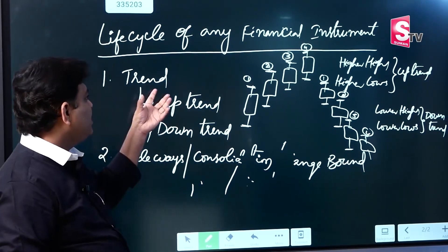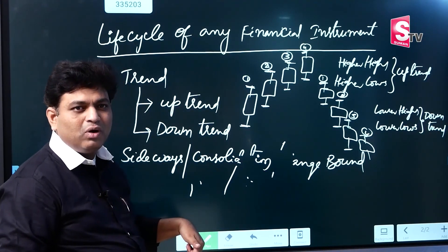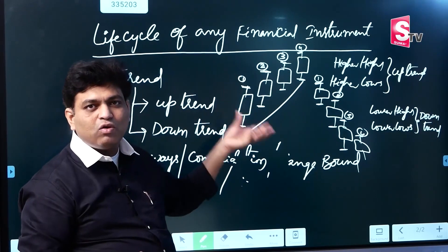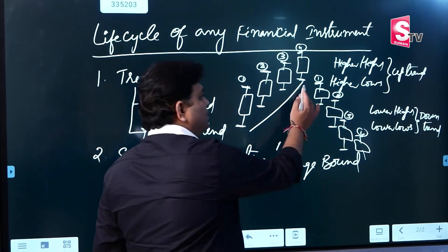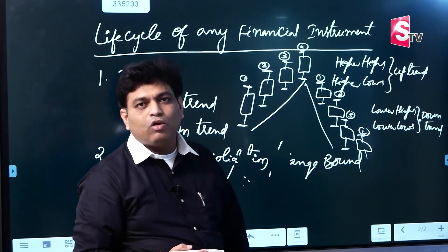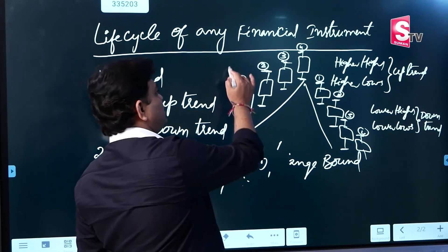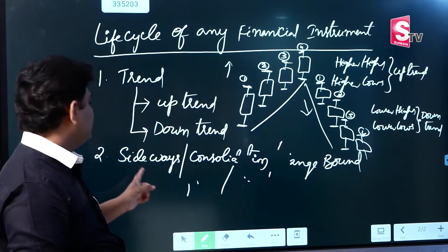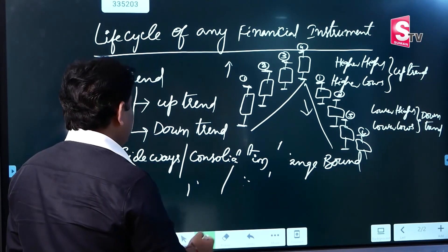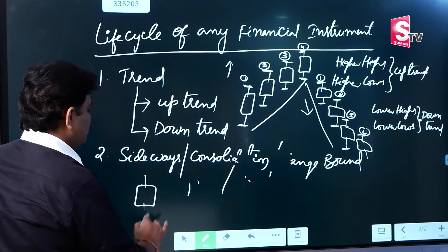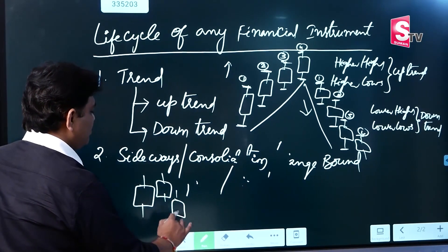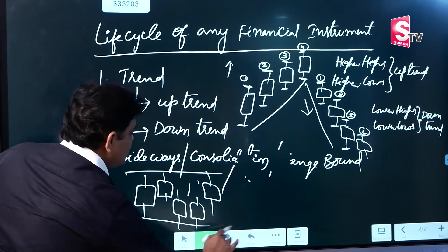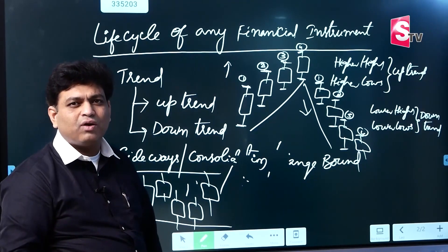So sideways is consolidation. Any particular counter goes through three states: number one, uptrend; number two, downtrend. In an uptrend, we call higher highs and higher lows. Lower lows and lower highs form a downtrend. And this sideways consolidation forms little zigzag candles. Now, we can trade a particular financial counter within a particular range.